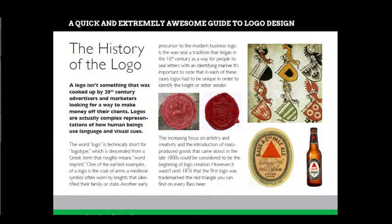We can say that logos were first used during the 17th century for products. However, it wasn't until 1876 — the late 17th century — that the first logo was trademarked. Trademarking means you copyright a logo or make that logo a symbol of something. The red triangle found on every Bass Beer became the trademark of that product.